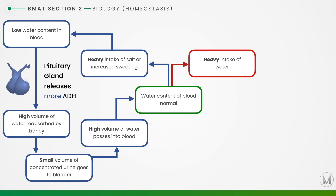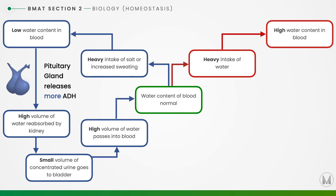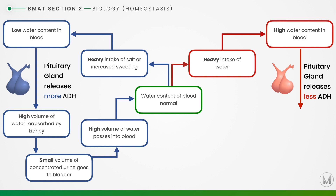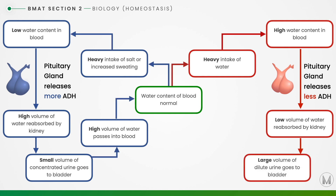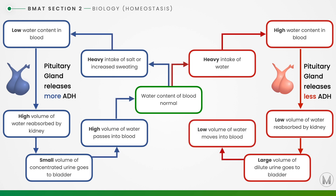If we have a heavy intake of water, we have too much water in our blood. That high water content is detected by osmoreceptors in our hypothalamus, which tells the pituitary gland to release less ADH. Less ADH reaches the kidneys, telling them to absorb a lower volume of water. This produces a large volume of dilute urine, the lower volume of water moves back into the blood, and we return to normal — with urine that is clearer and less dark in colour.